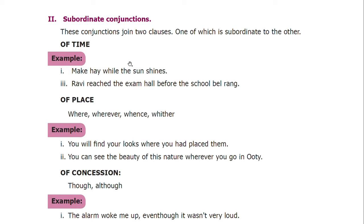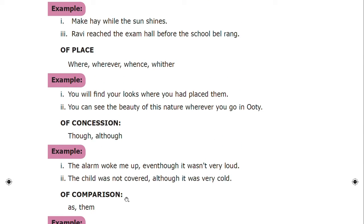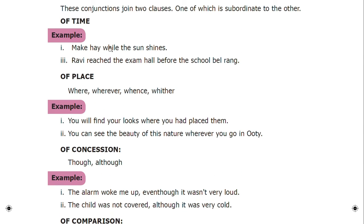Subordinating conjunctions join two clauses, one of which is subordinate to the other. There are four types: of time, of place, of concession, and of comparison. Example of time: 'Make hay while the sun shines' — here the clause 'while the sun shines' is subordinate. Example of place: conjunctions used are 'where,' 'wherever,' 'whence' — 'You can see the beauty of this nature wherever you go.'